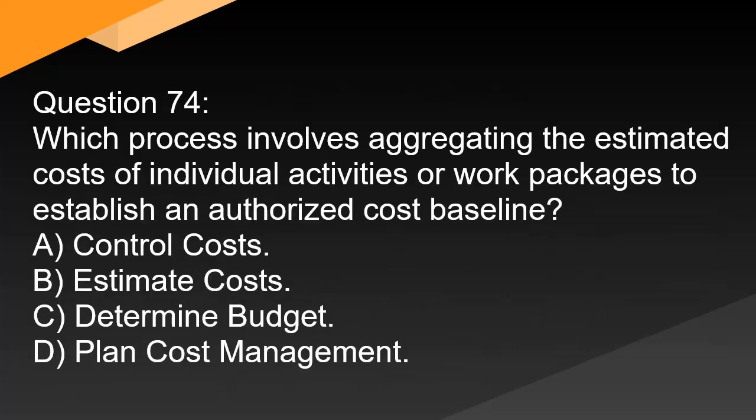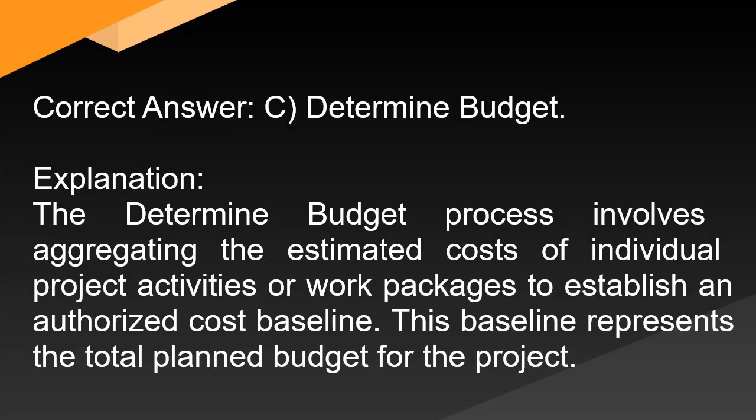Question 74: Which process involves aggregating the estimated costs of individual activities or work packages to establish an authorized cost baseline? A. Control costs. B. Estimate costs. C. Determine budget. D. Plan cost management. Correct answer: C. Determine budget. Explanation: The determine budget process involves aggregating the estimated costs of individual project activities or work packages to establish an authorized cost baseline. This baseline represents the total planned budget for the project.